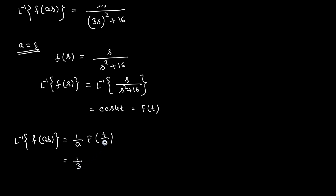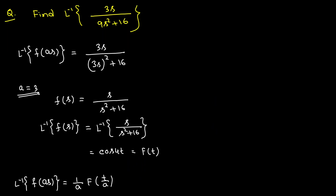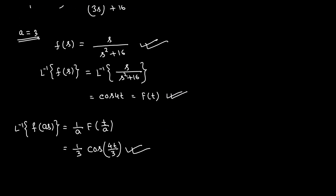Using the formula L⁻¹{F(as)} = (1/a) f(t/a) with a = 3: the answer is (1/3) cos(4t/3). So first identify F(s), then find f(t) = L⁻¹{F(s)}, then apply the scale property formula. The final answer is (1/3) cos(4t/3).